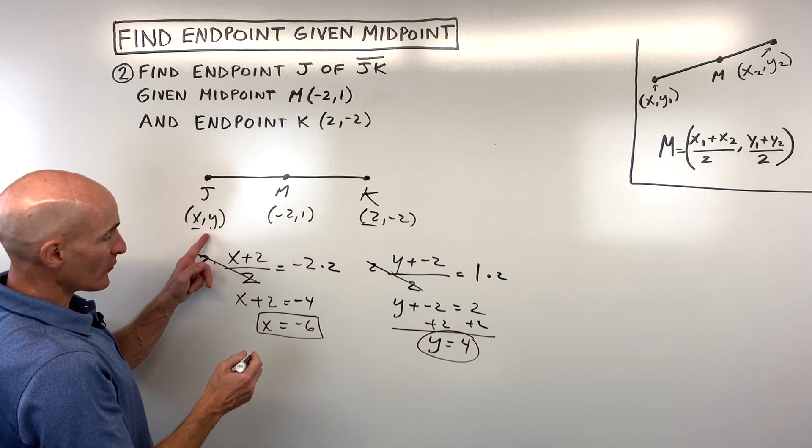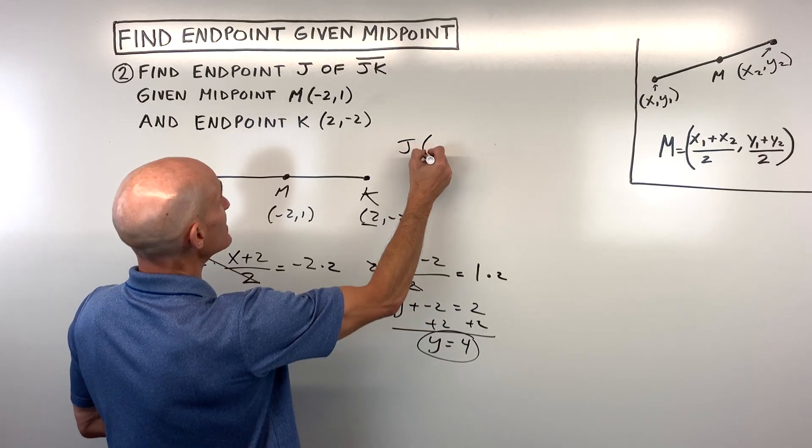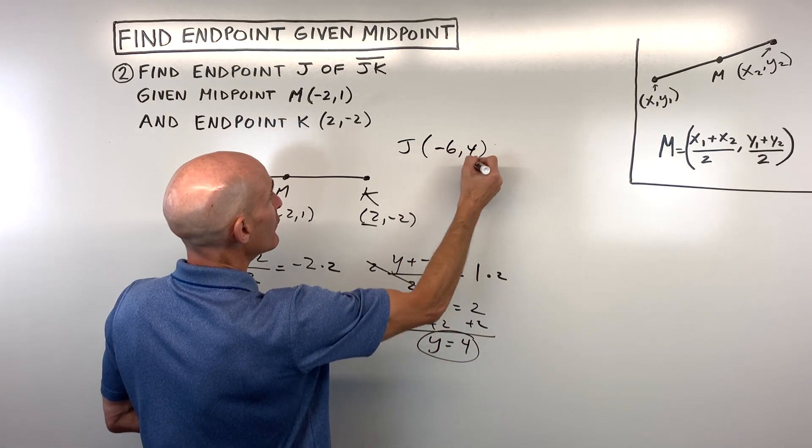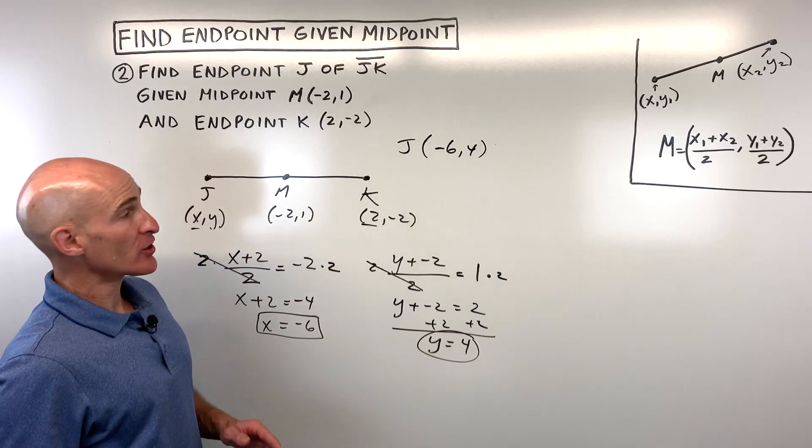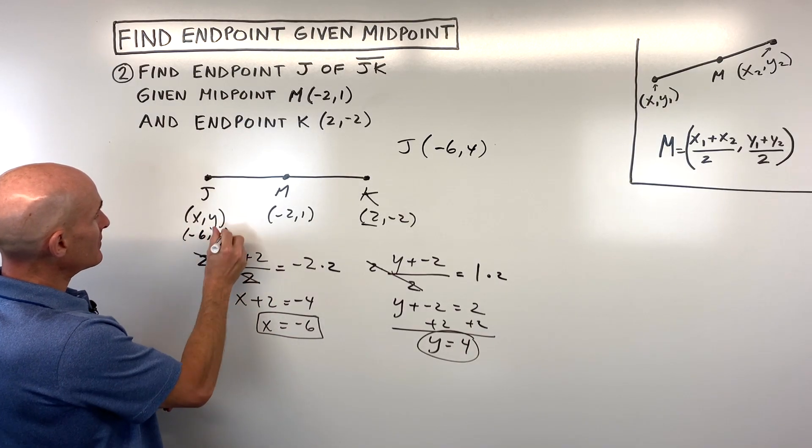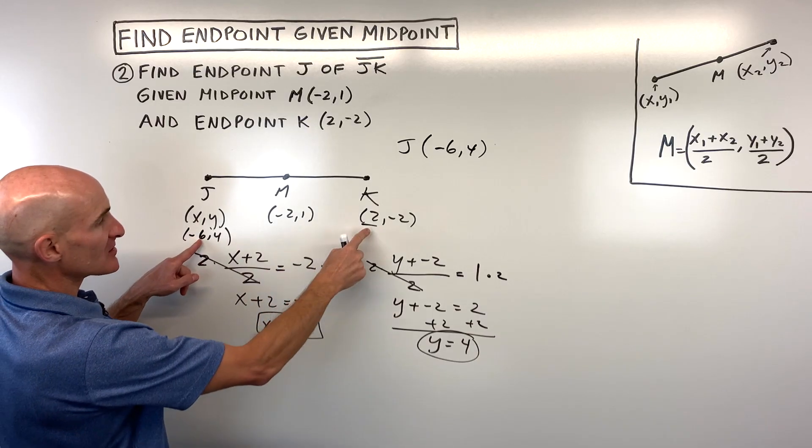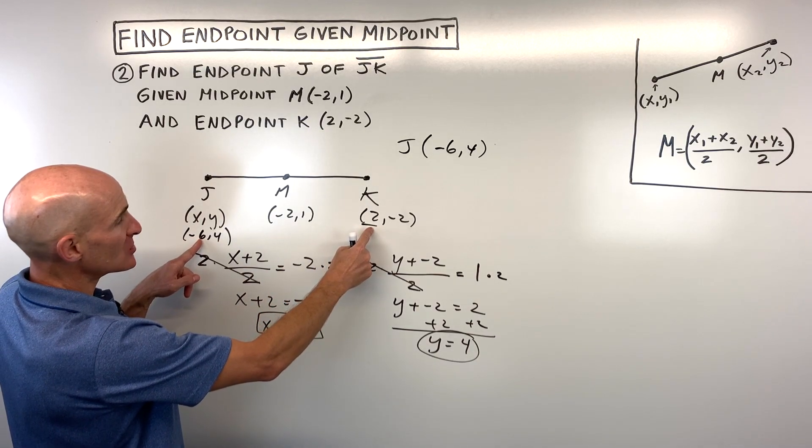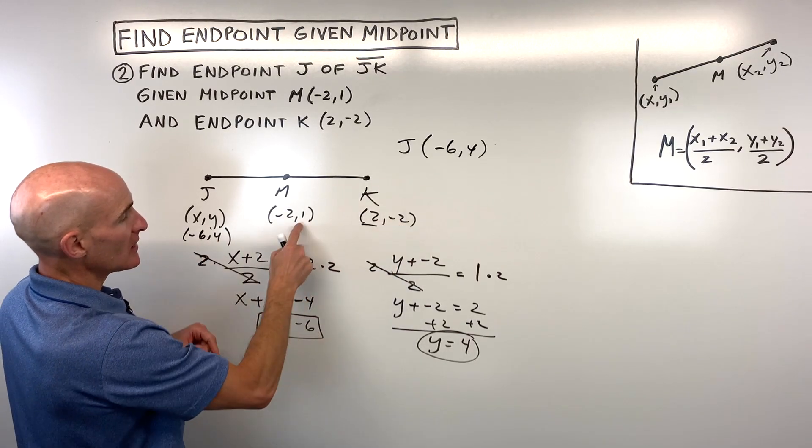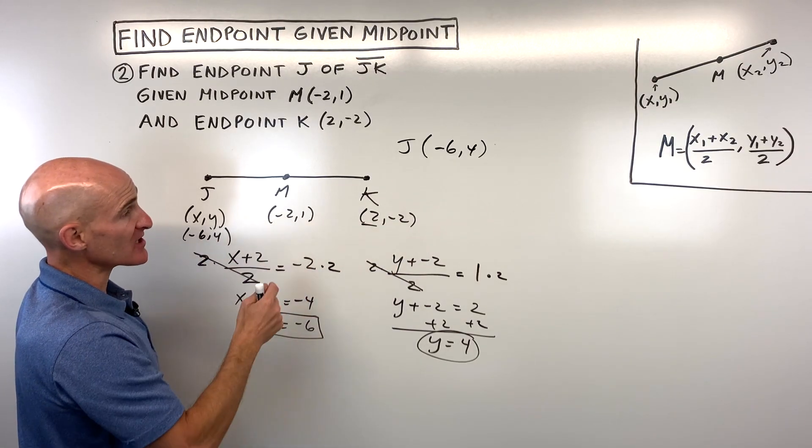And so that's the endpoint over here, it's going to be at the point, so J is at negative six, comma four. Now another way to check your work is to go ahead and look at negative six, four. You could say negative six plus two is negative four, divided by two is negative two, that checks out. Four plus negative two is two, divided by two is equal to one, that checks out.